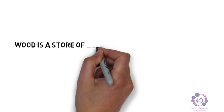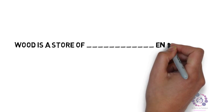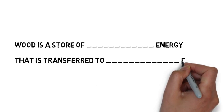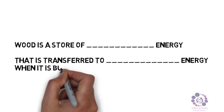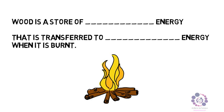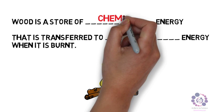Wood is a store of what type of energy that is transferred to another type of energy when it is burnt? The answer is, wood is a store of chemical energy that is transferred to thermal energy when it is burnt.